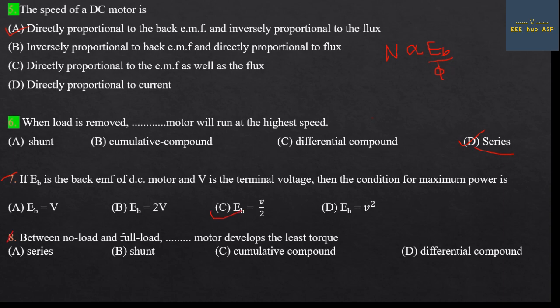Seventh question: Between no load and full load, which DC motor develops the least torque? Answer: Option B — shunt motor.